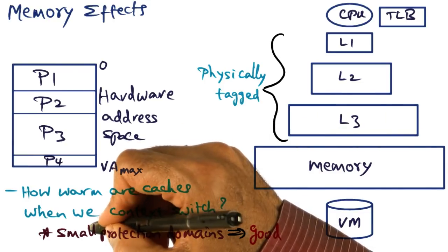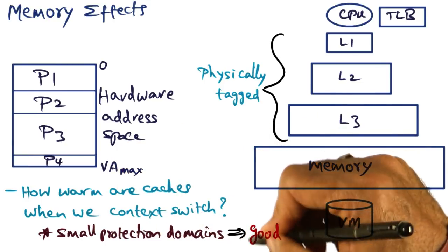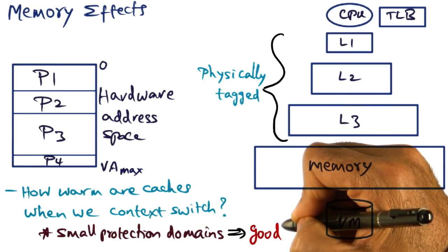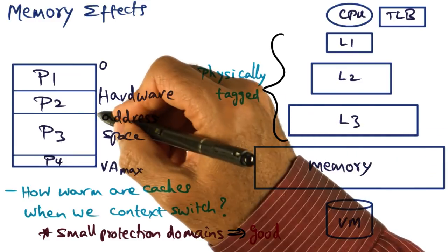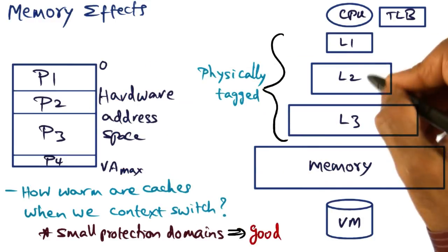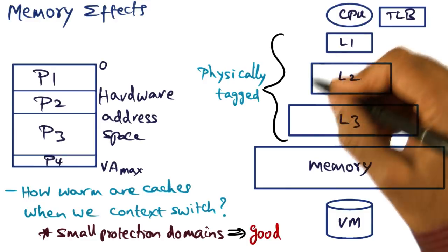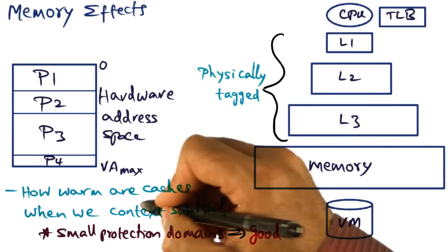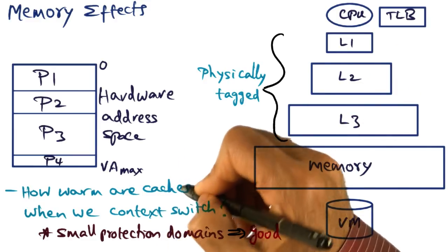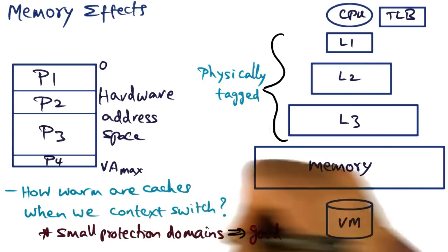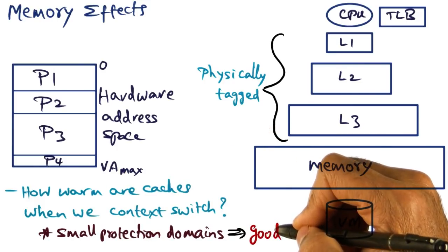And therefore, when we go across small protection domains, there's a good chance that the locality for the newly scheduled small protection domain is going to be contained in the cache hierarchy. So the caches are probably going to be warm when we do context switches, so long as the protection domains are small.